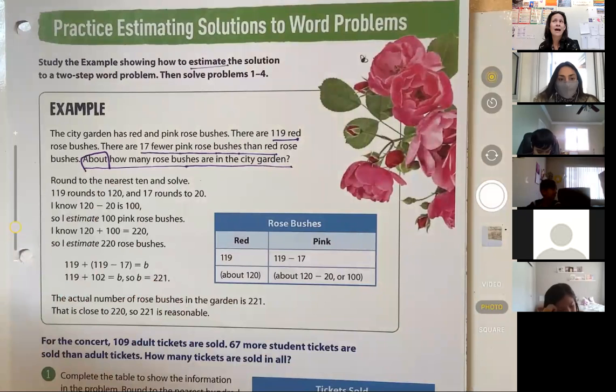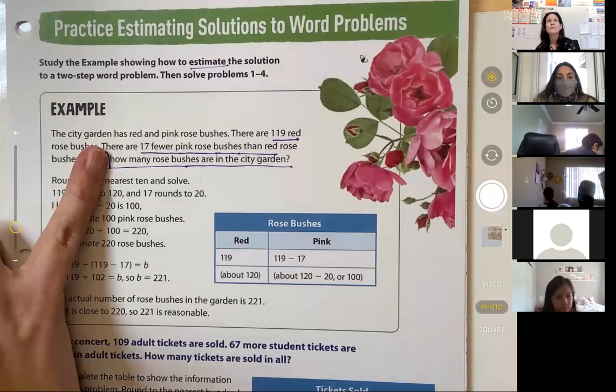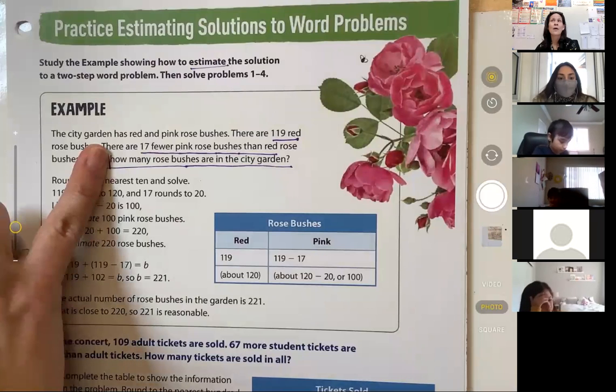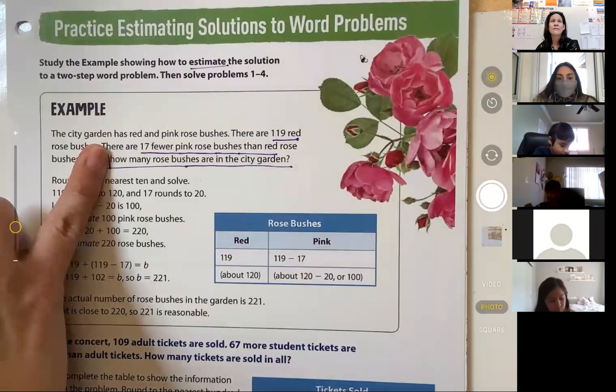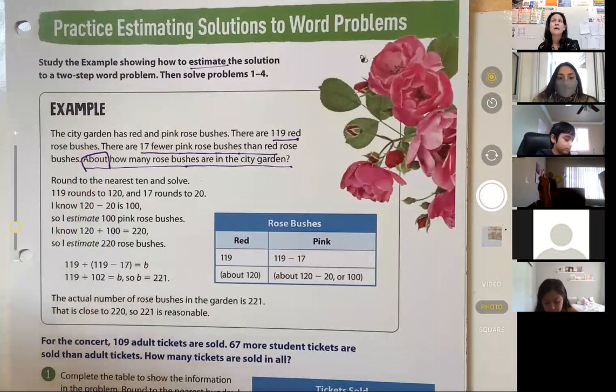I want you to see how this question changes when I do one simple thing. I want you to see how the question changes, friends, and it changes this way. If I take out that one word, and I ask you how many rose bushes are in the city garden, I need the actual amount. That is not what I'm asking you. I'm asking you about how many, which means we are estimating.